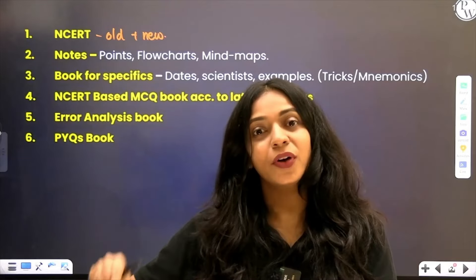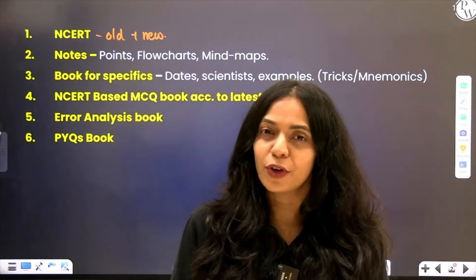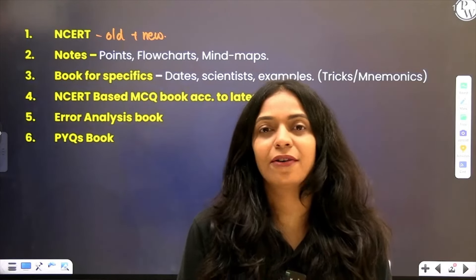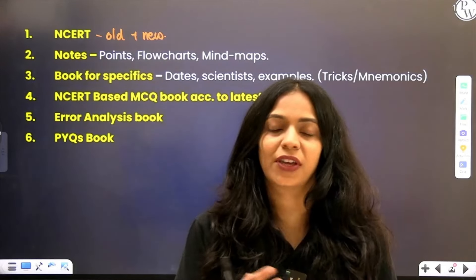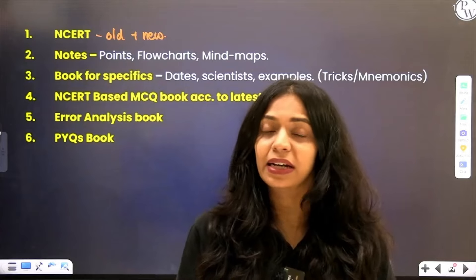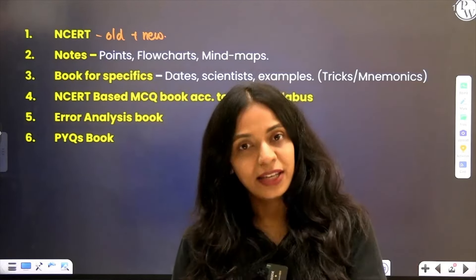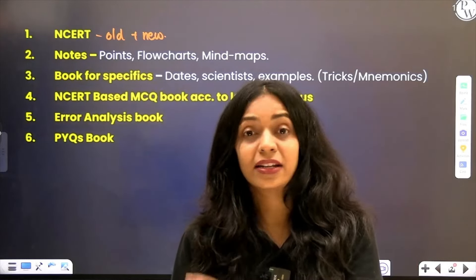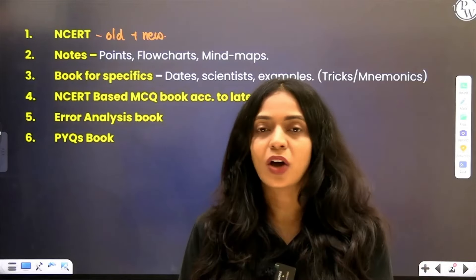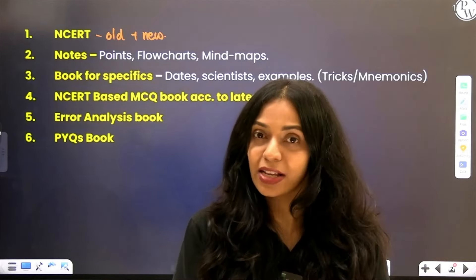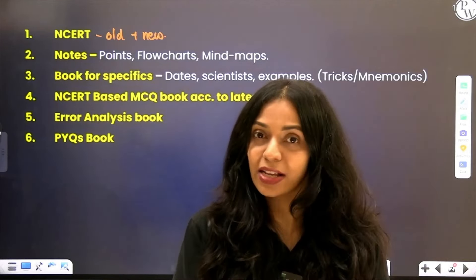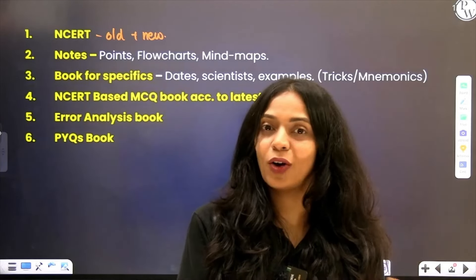For chapters like the Living World, Morphology of Flowering Plants, Anatomy of Flowering Plants in 11th grade, and Organisms and Population in 12th grade, you should refer the old textbook. According to the NEET syllabus, there are certain concepts found only in the old textbook which have been deleted in the new one. For example, in Living World, the concept called 'What is Living' has been deleted in the new textbook but it is available only in the old textbook and it is part of your syllabus.